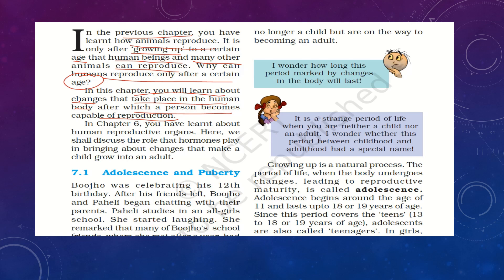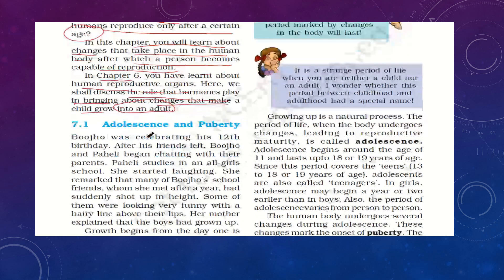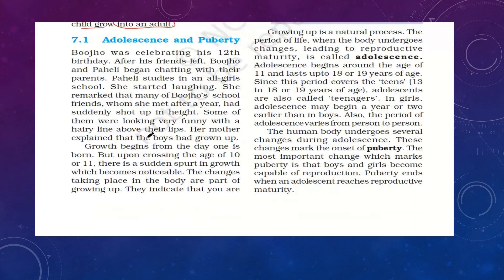In Chapter 6 we have already studied about the reproductive organs. Here we will discuss the role of hormones in bringing about the changes that make a child grow into an adult. The body is gradually changing from child to adult during a phase called adolescence and puberty. So what is adolescence and puberty?